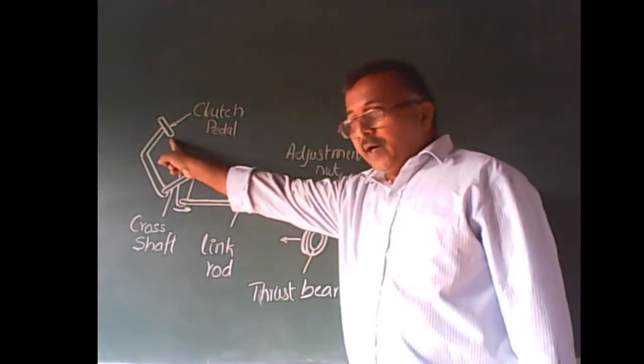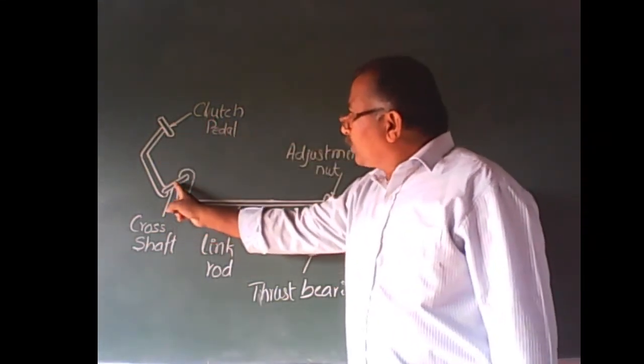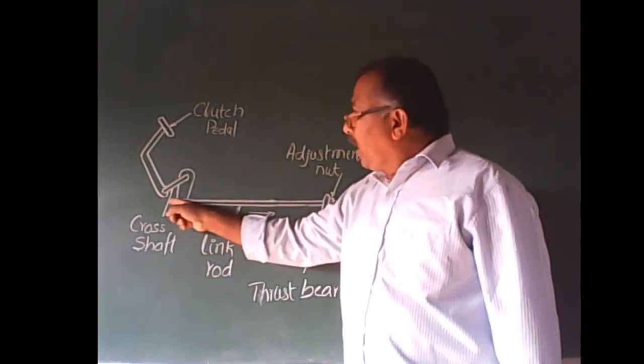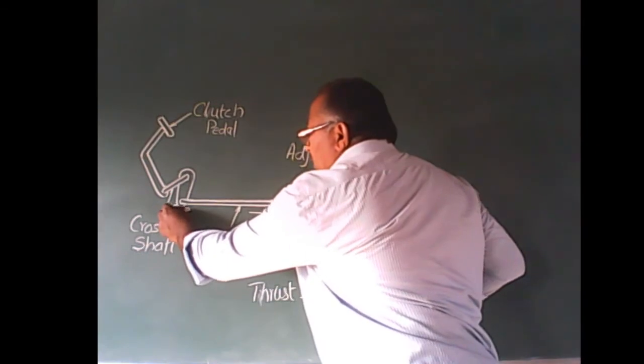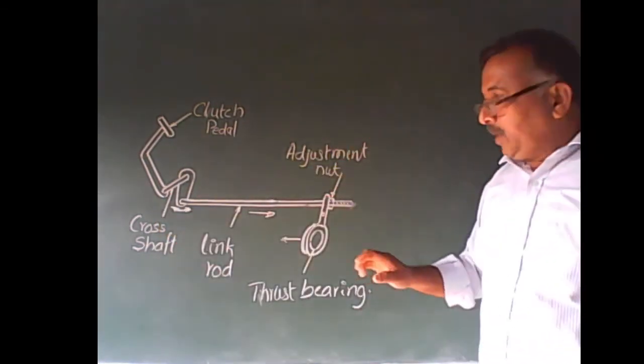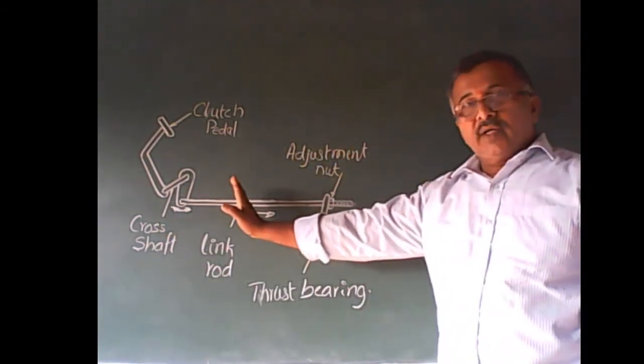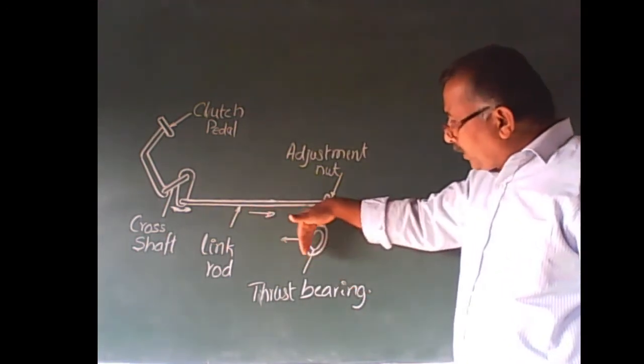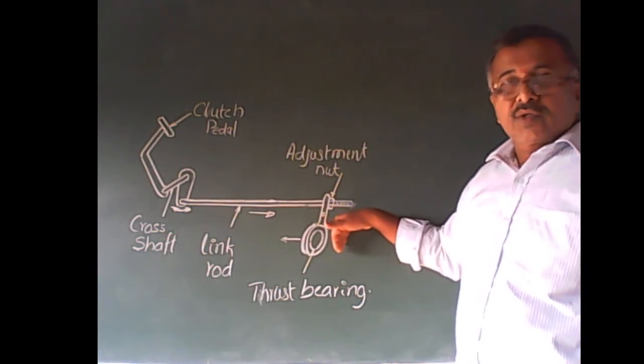When driver leaves the pedal, cross shaft returns to its original position. The arm swings backward. According to that movement, this link rod also moves backward, release bearing returns to its original position. Thus, clutch goes to engage.